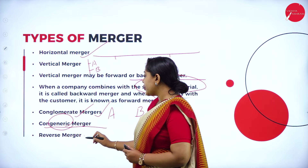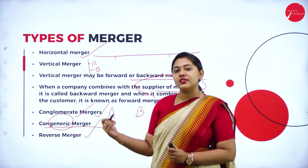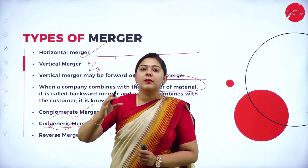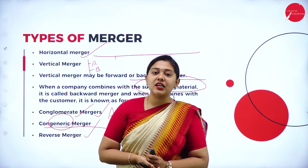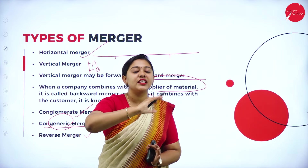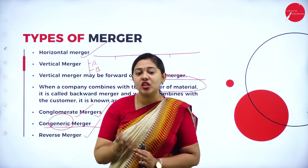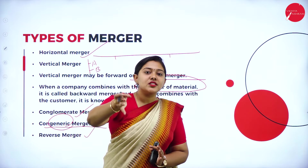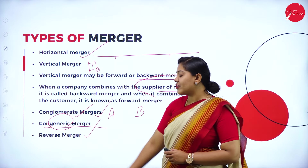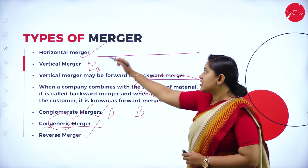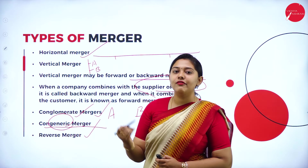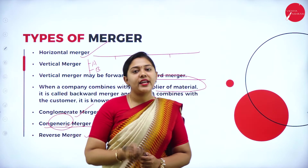Next, we have reverse merger. When a private company merges with a public company — when a private company becomes a public company, or when a small-scale industry merges with a large-scale industry — then it is called a reverse merger. These are the different types of mergers you have to study for your examination.